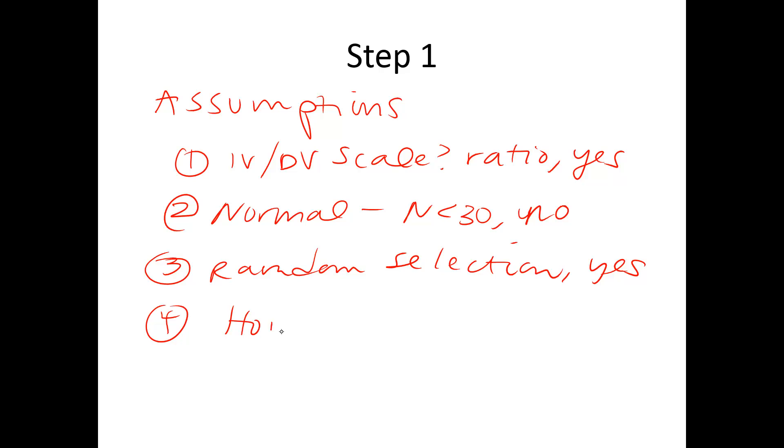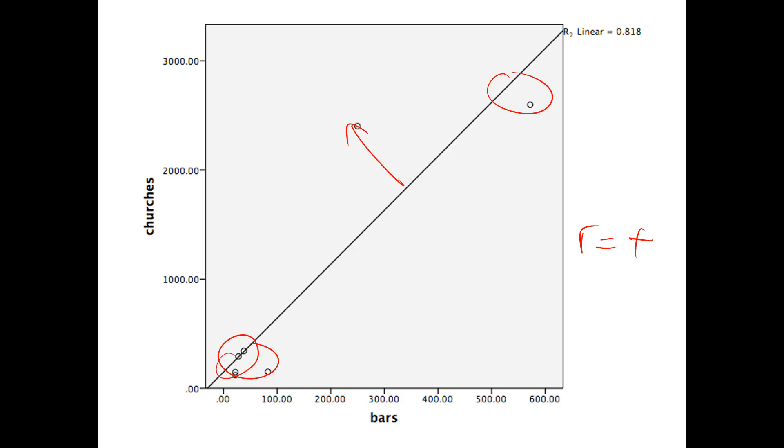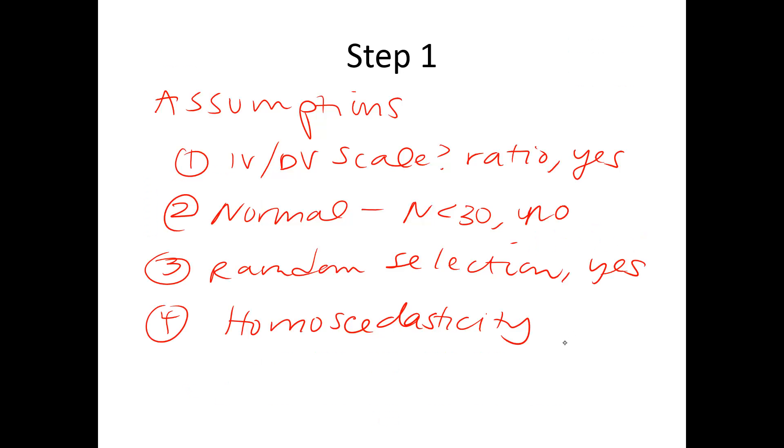The last one is homoscedasticity. What you want to do is look at your scatter plot and make sure the spread of the variables is roughly the same across the distribution of the data. I'd say it's kind of iffy because here they're pretty close, and here they're kind of far away, but I only have a couple of points. So I would probably say yes. That one point needs some friends so we can check it better, but the spread appears to be the same all the way down the rest of the data.